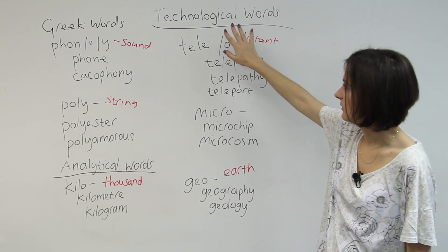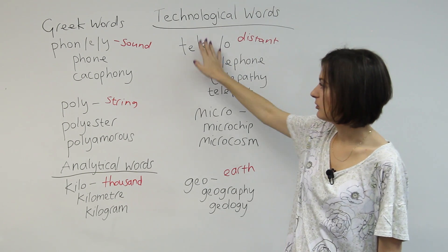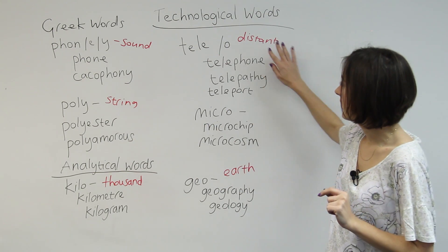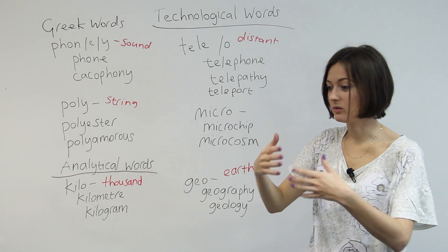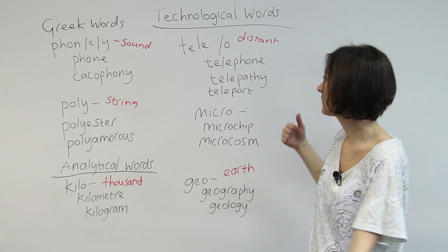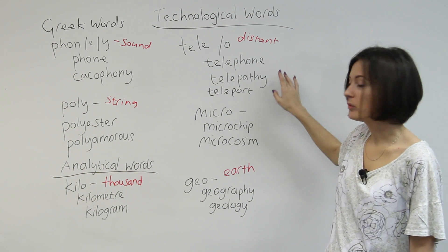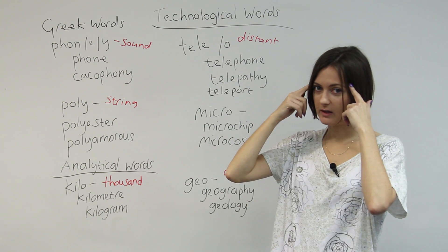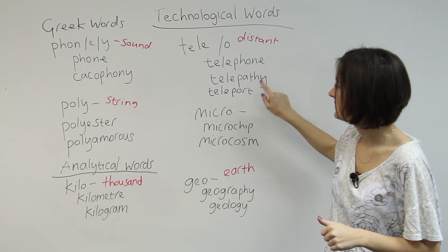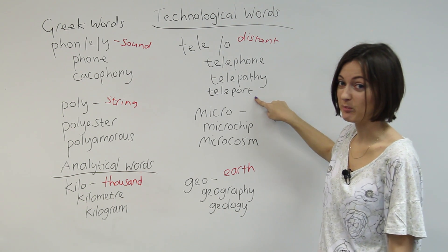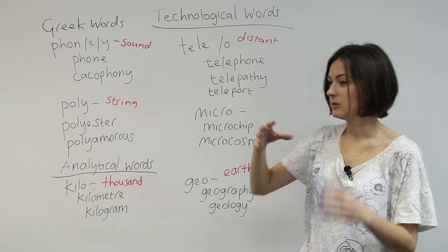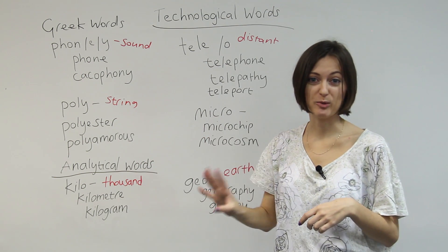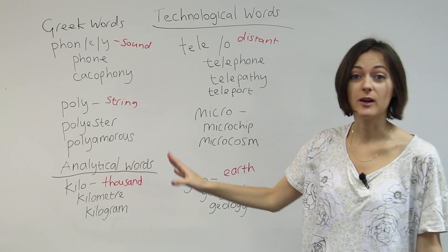Looking at more technological words, we've got 'tele' — the 'tele' part means distant or far away. So we have telephone: communicating with someone who's not physically near you, someone who's far away. Telepathy is also communicating with someone, but through the mind. And teleport — which, as far as I know, hasn't been invented yet, but it would be really cool. It's when you can travel to one place just like that — you don't need planes, buses, or Oyster cards. You can just go using a teleport.